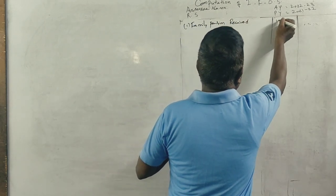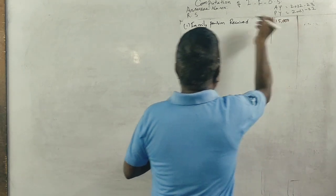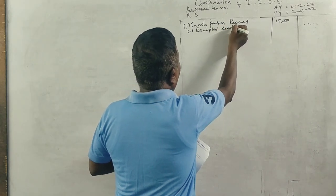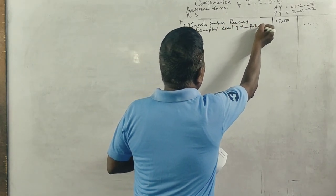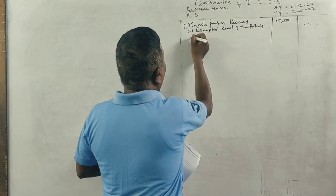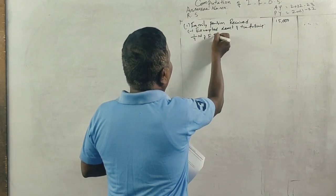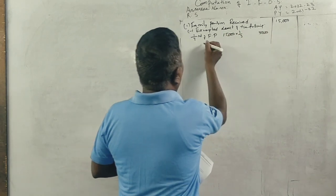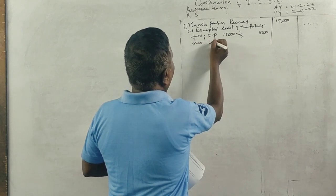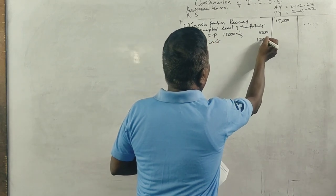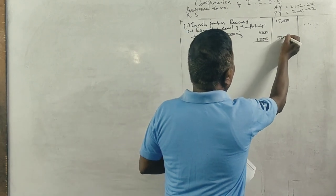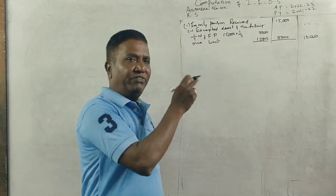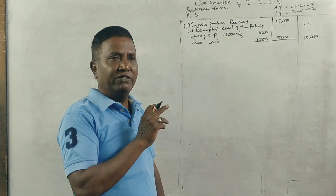Now we have exemption. Exempted, least of the following. The least of the following is one-third of family pension or 15,000. One-third of the family pension or maximum limit of 15,000, whichever is lower.